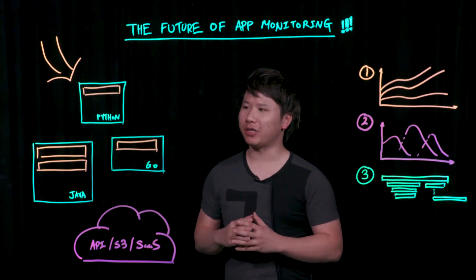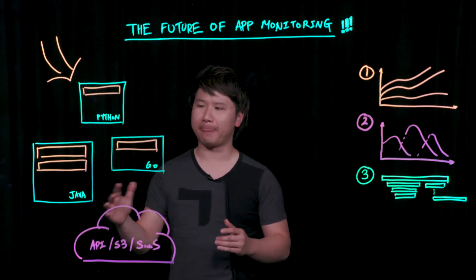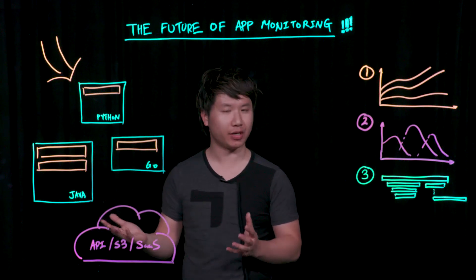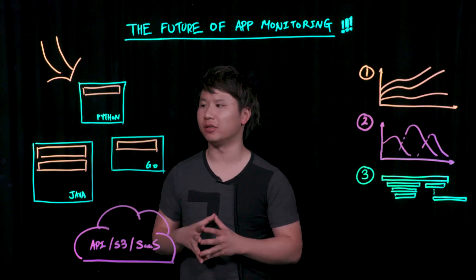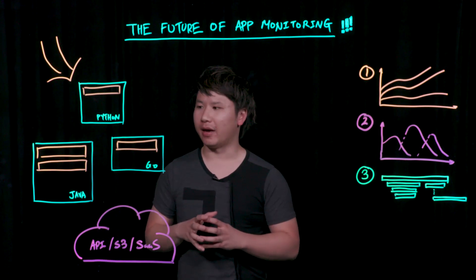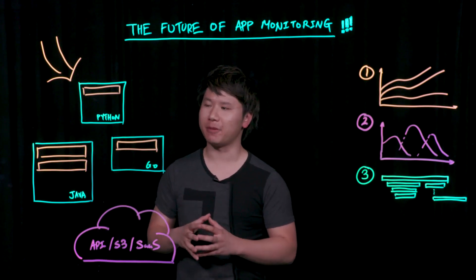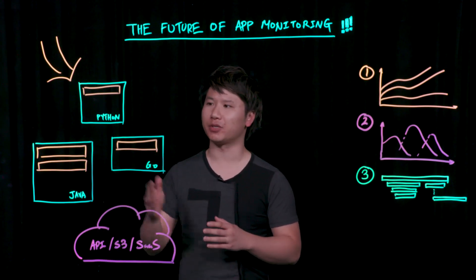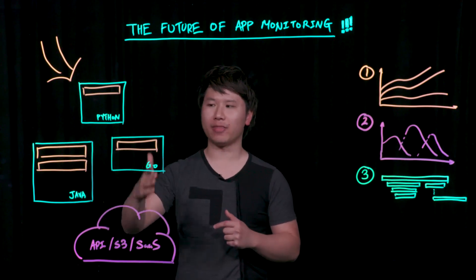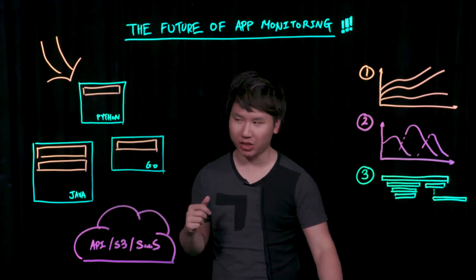I want to go with a very simple example here of a microservice framework. It doesn't matter where you're running it — it could be Bare Metal, it could be on Docker, it could be on Kubernetes. And more and more often we're seeing people run applications such as Python, Java, and Go, and they're interoperating heterogeneously.